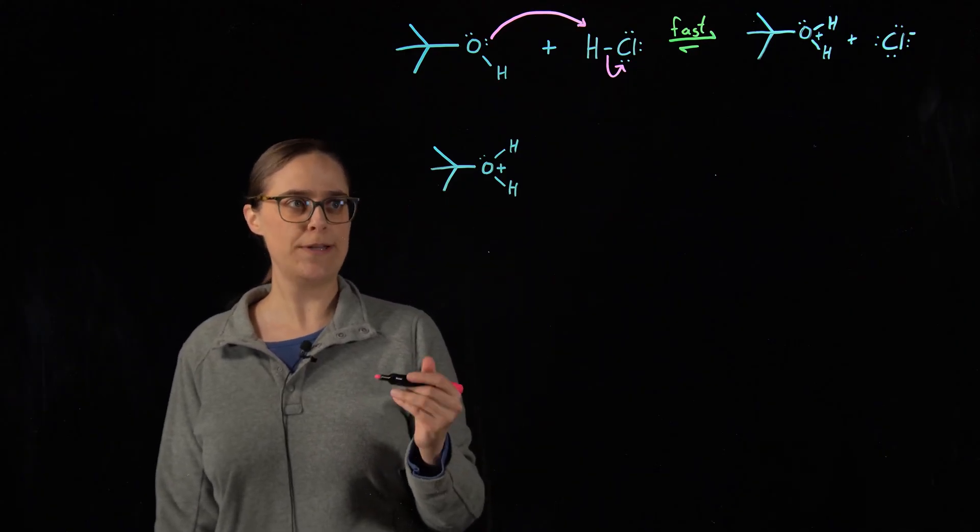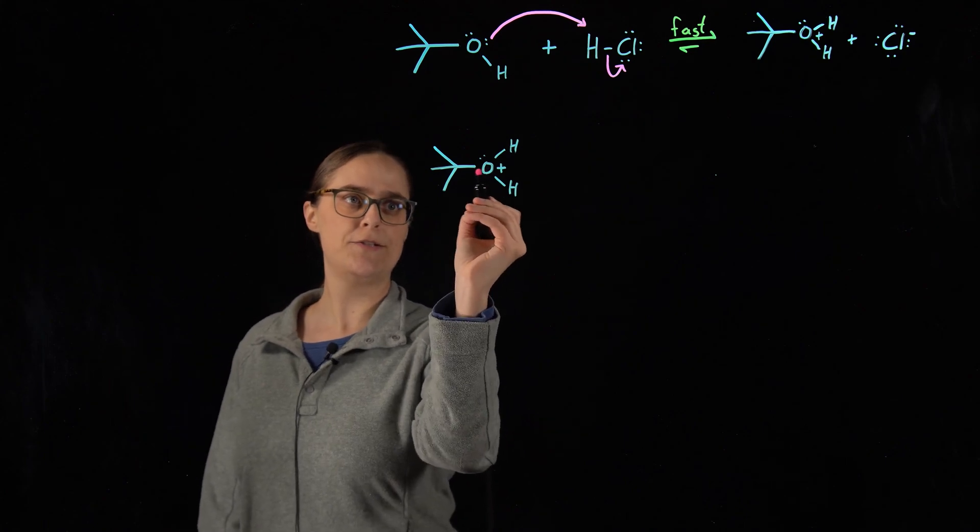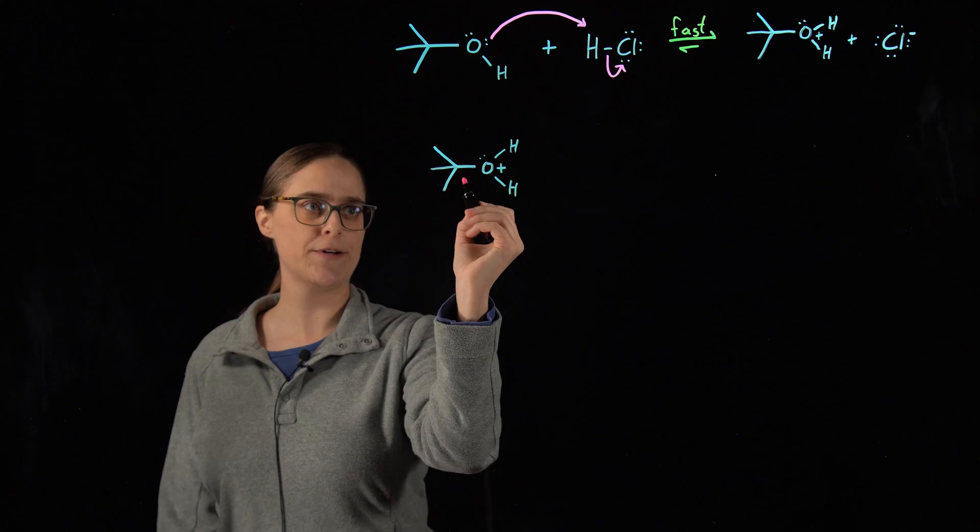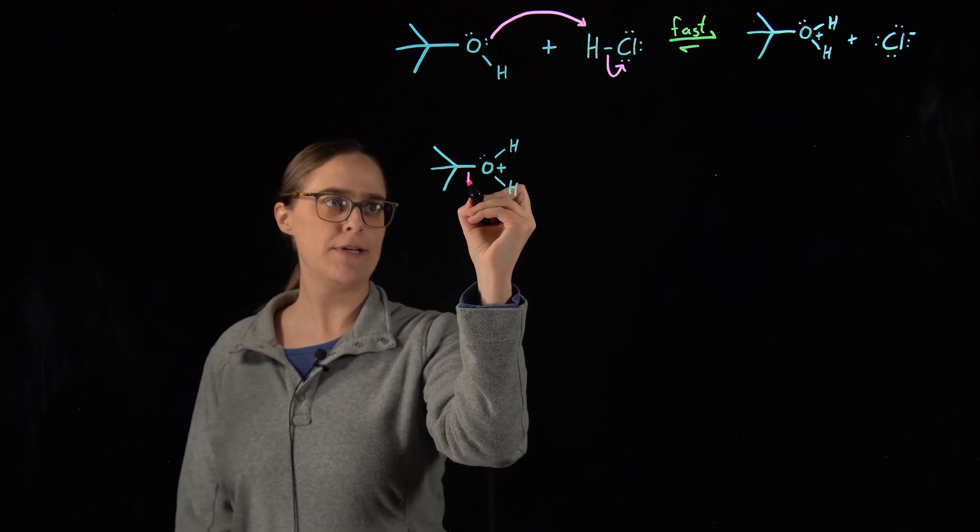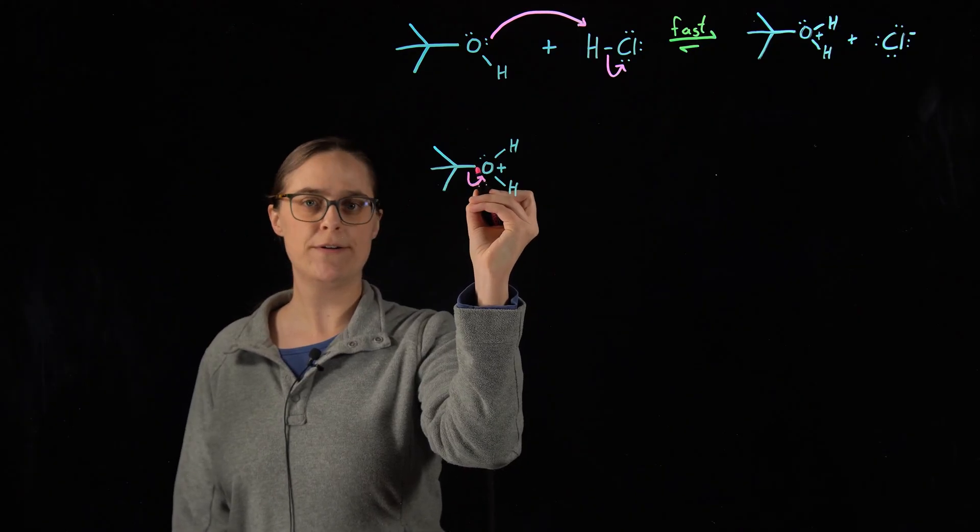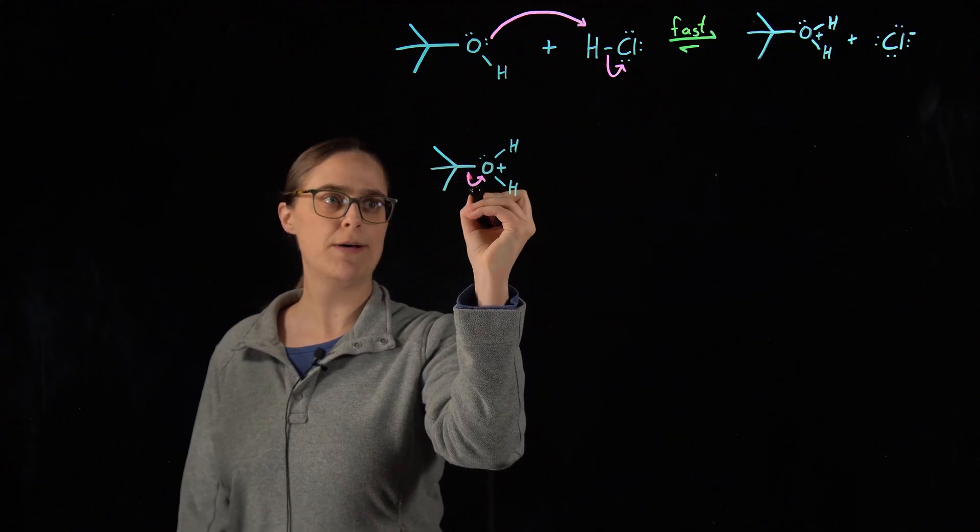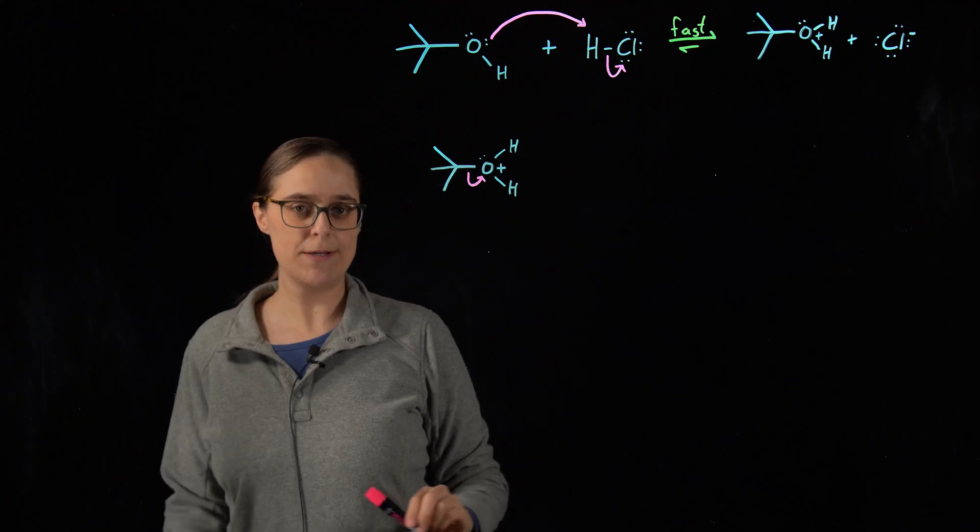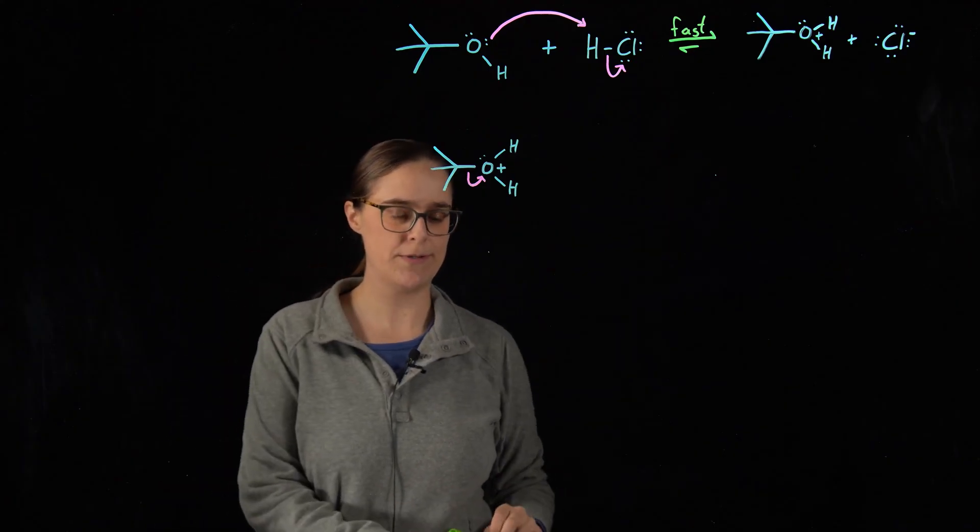So what's going to happen here is that this oxygen is going to be fighting over these electrons that it's sharing with the carbon. And a lot of times it wins that battle. So electrons in this carbon oxygen bond are going to go entirely to this oxygen. And this molecule breaks apart in the process.